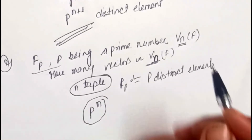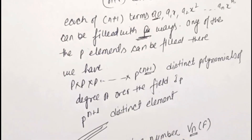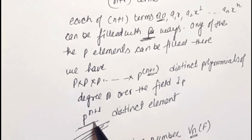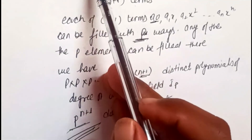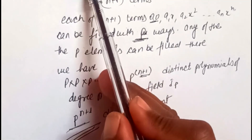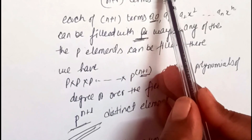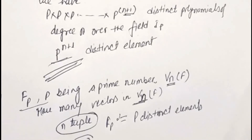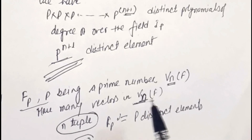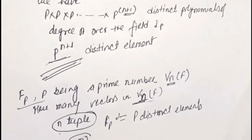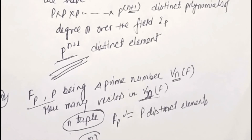So the number of elements in Vₙ(F_p) is p^n. In the case of a polynomial of degree n, we have n+1 terms, giving p^(n+1) distinct elements. But in the simple vector space Vₙ, we have an n-tuple, so the answer is p^n.